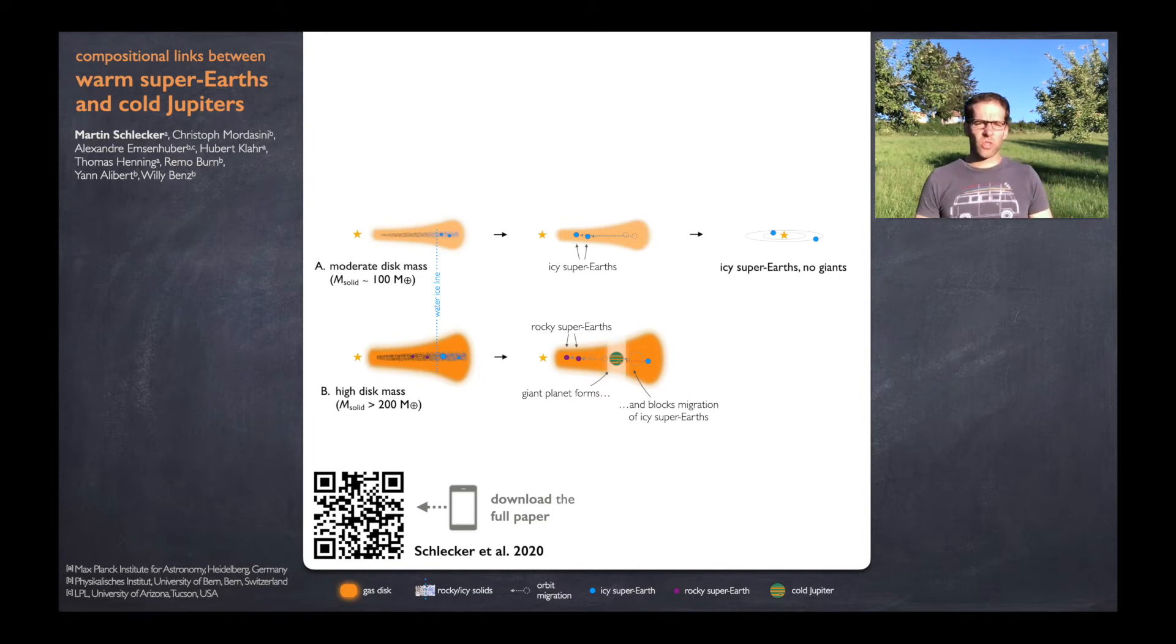But the conditions are also right to form giant planets further out and they prevent icy cores from migrating inwards. In this case we get high-density super-Earths in the inner system plus a distant giant planet.